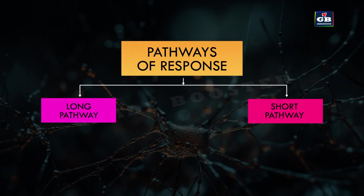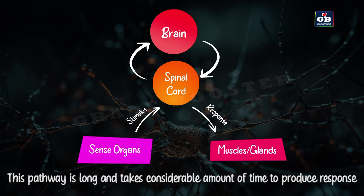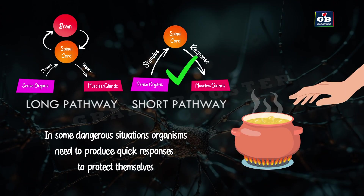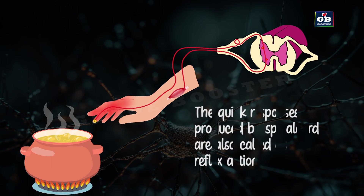Pathways of response — there are two pathways. The long pathway: signals go from sense organ to spinal cord, to brain, again to spinal cord and to muscles, so this takes more time. The short pathway: signals go from sense organ to spinal cord directly to muscles. This gives a fast response and is called a reflex action. Reflex actions are quick, automatic and involuntary responses that are very fast and protect us from danger.